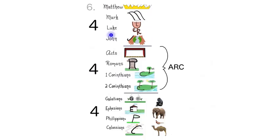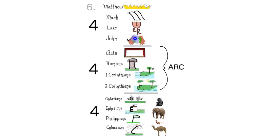To connect the first group with the second group of Section 6: Acts is the account of what happened after Jesus was taken to heaven. And we already discussed the animals getting on the ark to connect these two groups. Let's say this section together three times: Matthew, Mark, Luke, John, Acts, Romans.